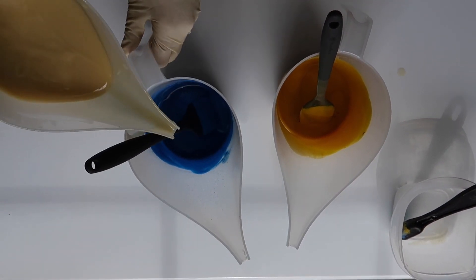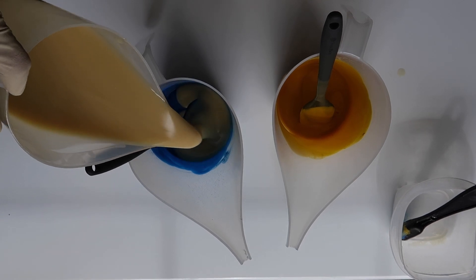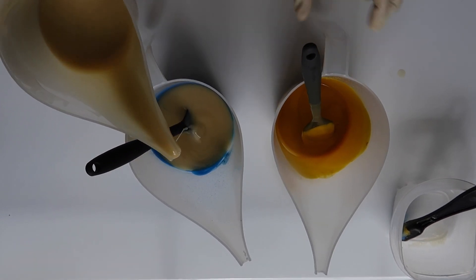Once the mica was mixed very well, then I added more of my soap batter so I don't get the clumps of mica in there.